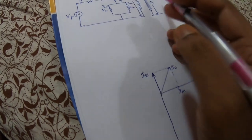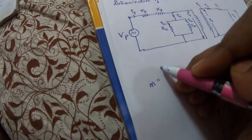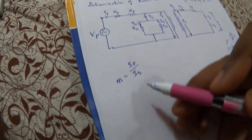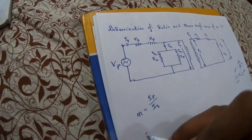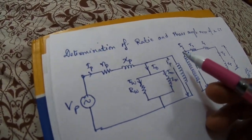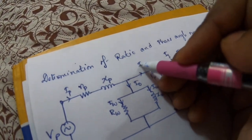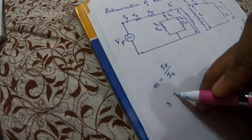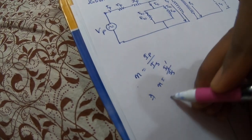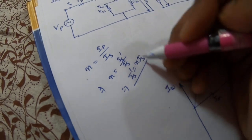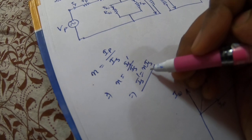We consider the turns ratio, small n, equals Ip divided by Is. When the secondary current Is is referred to the primary side, the referred current Is_dash satisfies n = Is_dash / Is, so Is_dash equals n times Is. This Is_dash is the secondary side current referred to the primary side, and it also acts as the counter-balancing current.